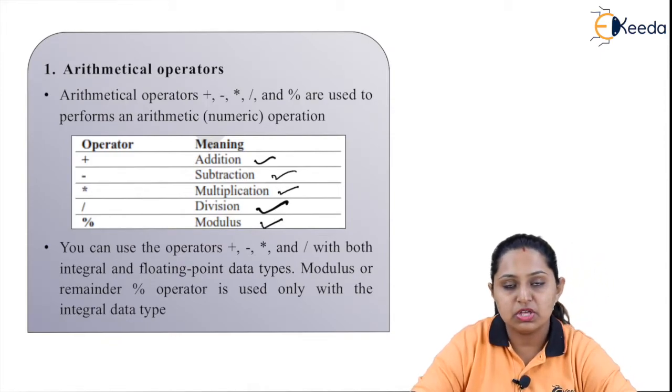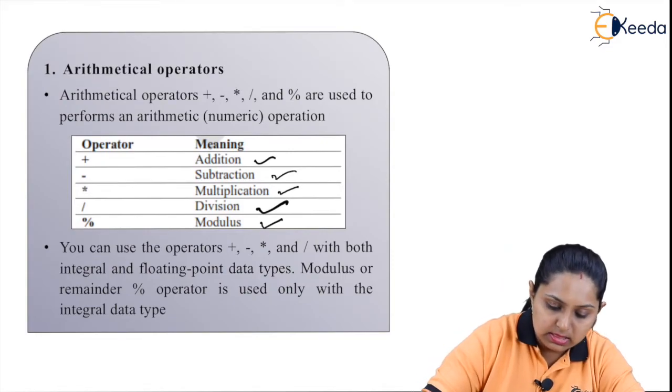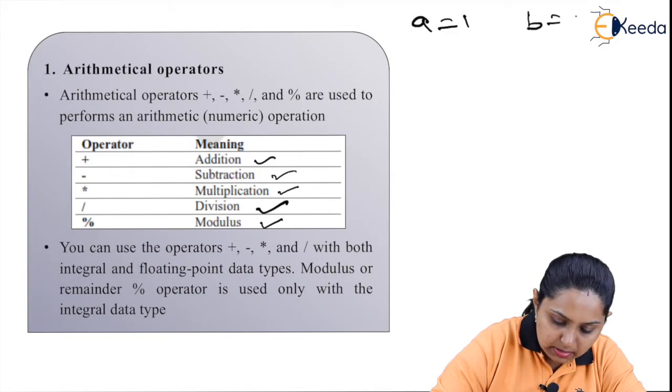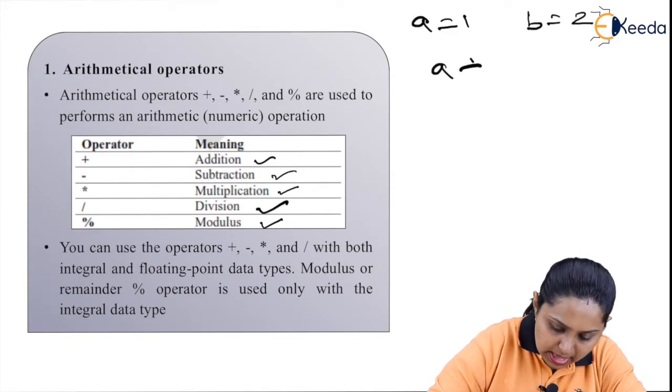Now, we'll see the operations one by one. Consider a is equal to 1 and b is equal to 2. Now, when we say a plus b, we'll get the output as 3.